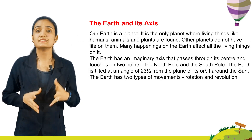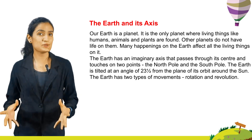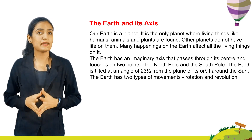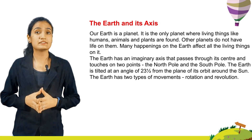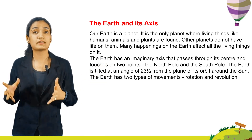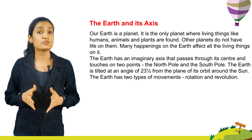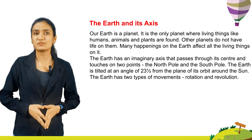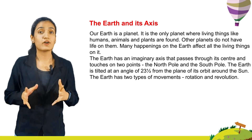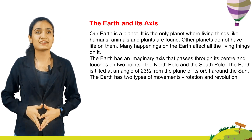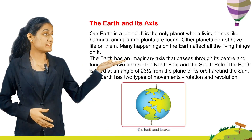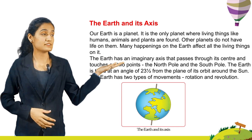The earth and its axis. Our earth is a planet. It is the only planet where living things like humans, animals and plants are found. Other planets do not have life on them. Many happenings on the earth affect all the living things on it. The earth has an imaginary axis that passes through its center and touches on two points, the north pole and the south pole. The earth is tilted at an angle of 23 and a half degrees from the plane of its orbit around the sun. The earth has two types of movement: rotation and revolution. Here you can see the picture of the earth and its axis.